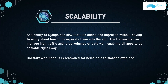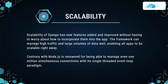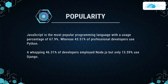Next is scalability. Django has new features added and improved without worrying about how to incorporate them, and the framework can manage high traffic and large volumes of data well. Node.js, on the other hand, is renowned for being able to manage even 1 million simultaneous connections with its single-threaded event loop paradigm. Both are scalable but have their own dynamics. On popularity, JavaScript leads with 67.9% usage, while 43.51% of professional developers use Python. Of those JavaScript developers, 46.31% use Node.js, while only 13.59% of Python developers use Django — so Node.js is clearly more popular.